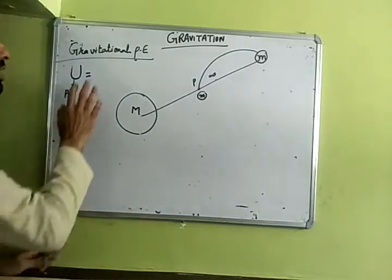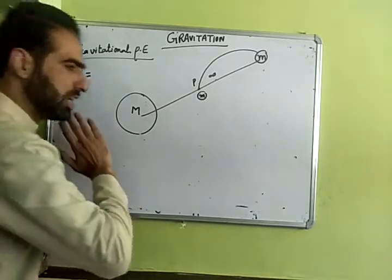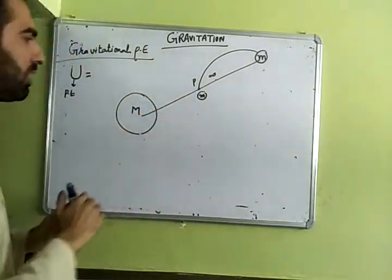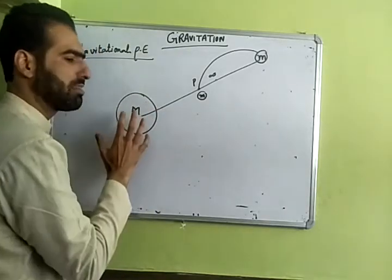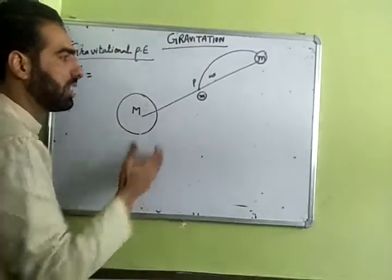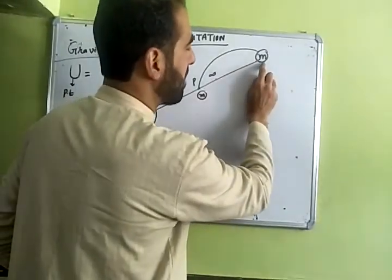So gravitational potential energy - in short, I want to explain that suppose you have a source mass here, which has a field existing around it. Now I bring a small mass m, any body, but this body is at infinity.